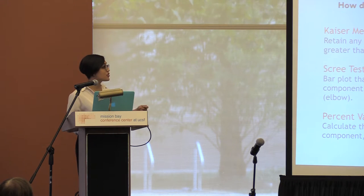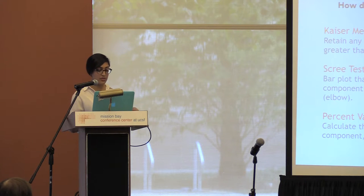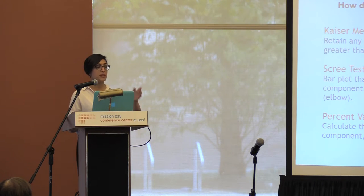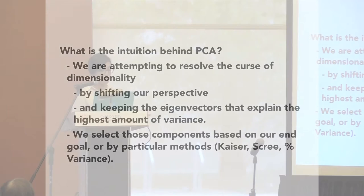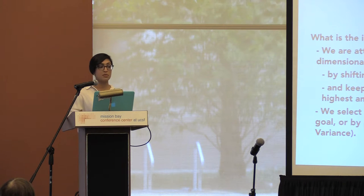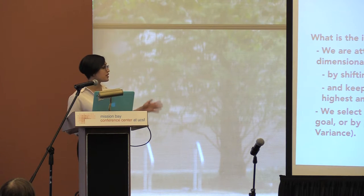You can say you want to explain 75% and pick all the components combined that build to that threshold. So what's the intuition behind PCA? We're attempting to resolve the curse of dimensionality by shifting our perspective and keeping the eigenvectors that explain the highest amount of variance. We select those components based on our end goal or by particular methods — Kaiser, scree, or variance. If your goal is to visualize clusters on a two-dimensional plane, pick two components. If you want your model to actually explain what's happening, go with Kaiser, scree, or percent variance explained.